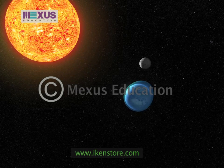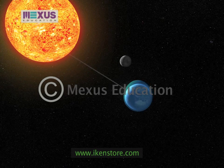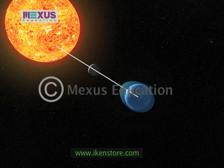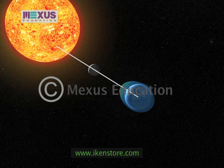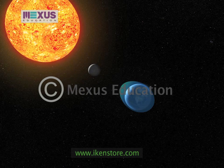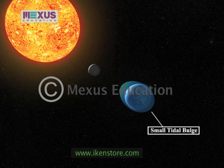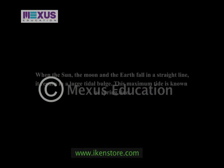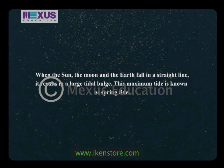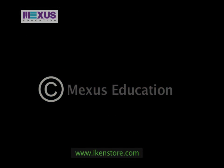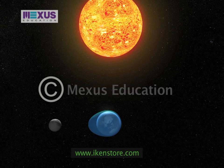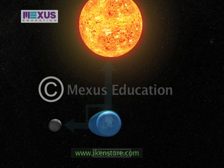When the sun, the moon, and the earth fall in a straight line, it results in a large tidal bulge. This maximum tide is known as spring tide. A smaller bulge is created on the other side of the earth due to the earth's rotation. When the moon is at right angles to the sun, it results in minimum tides known as neap tides.